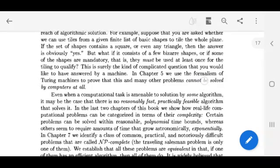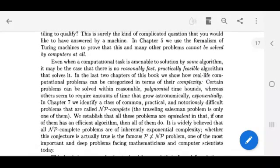Even when a computational task is amenable to solution by some algorithm, it may be the case that there is no reasonably fast, practically feasible algorithm that solves it. In the last two chapters of this book, we show how real-life computational problems can be categorized in terms of their complexity. Certain problems can be solved within reasonable polynomial time bounds, whereas others seem to require amounts of time that grow astronomically, exponentially.